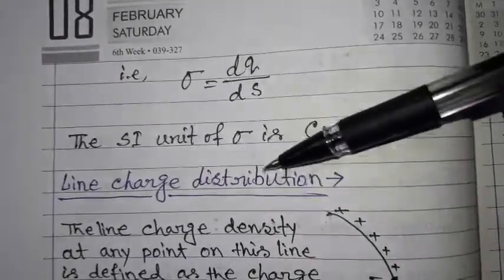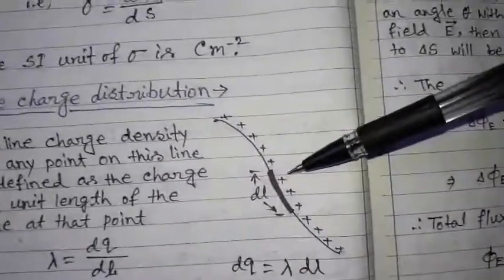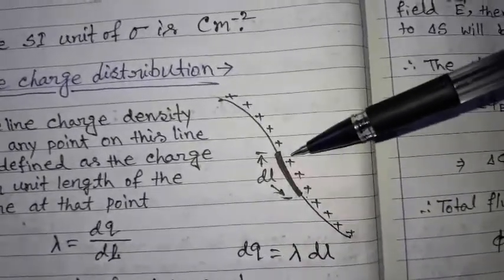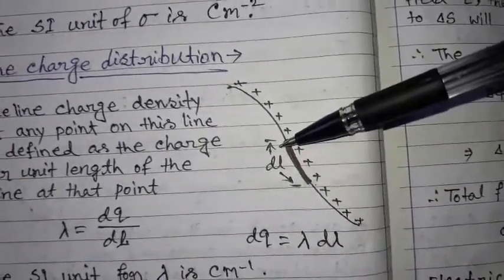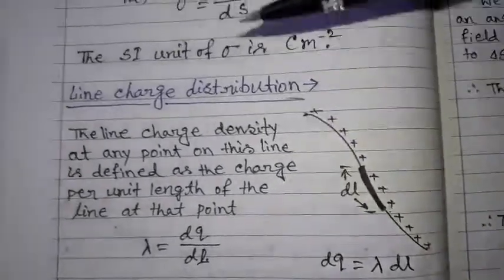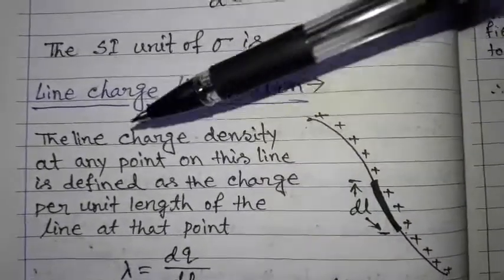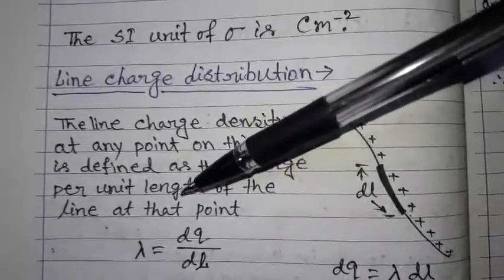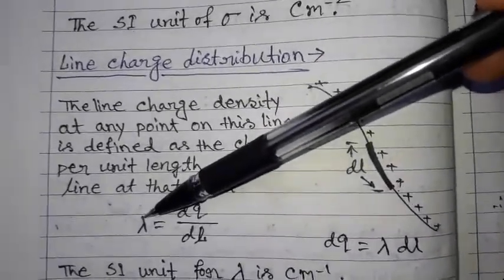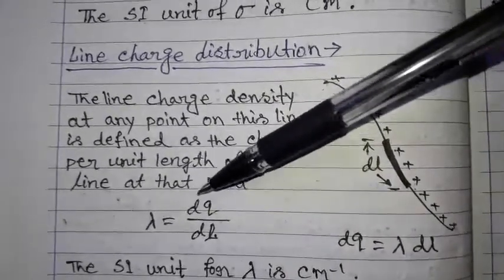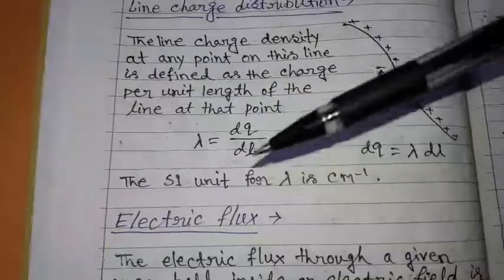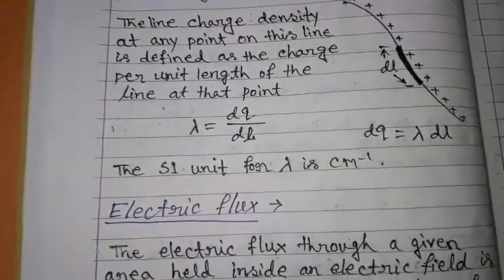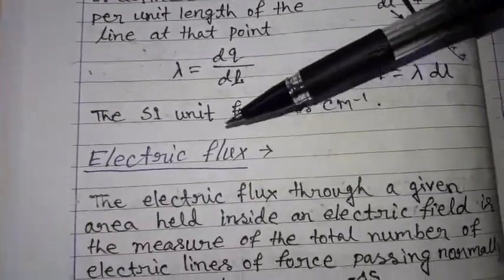Next is line charge distribution. Here in the diagram we consider a length of a metal wire containing some amount of charge. We consider an elemental length dl containing some amount of charge dq. The line charge density at any point on this line is defined as the charge per unit length at that point. Line charge density is represented by λ, where λ equals dq by dl. The SI unit of λ is coulomb per meter.